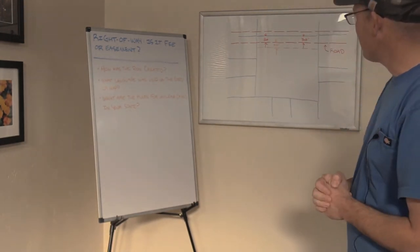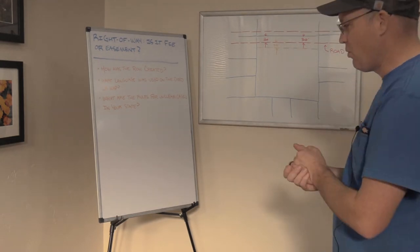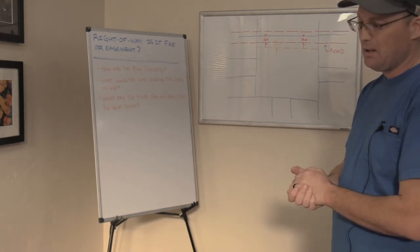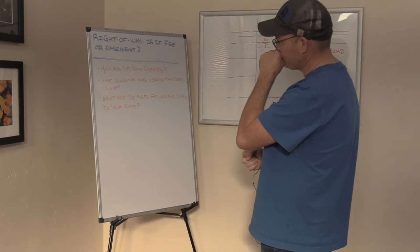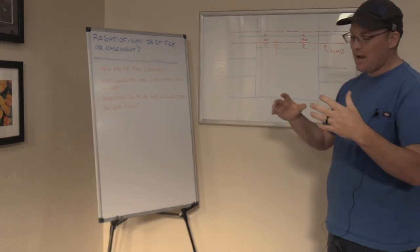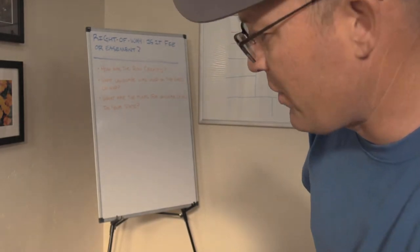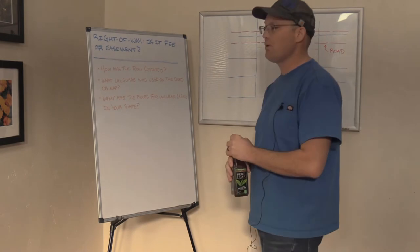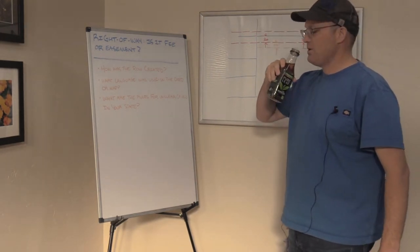I want to talk about why it becomes important and give you a couple of examples. I have one example that came up on a project here recently in the last few months, and then I've got an example from a few years ago. If you have a right-of-way, anytime you're doing a boundary survey — and certainly anytime you're doing a land title survey or an ALTA survey — you need to understand whether the right-of-way on or adjacent to the property is held as a fee or an easement.